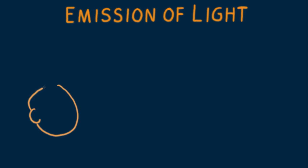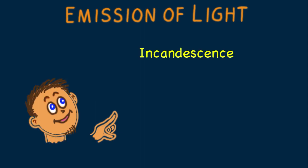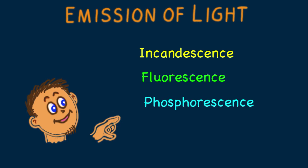Light is commonly emitted in several ways. We've discussed atomic excitation in the previous lessons. Now let's discuss other ways in which light is emitted: by incandescence, fluorescence, and phosphorescence.